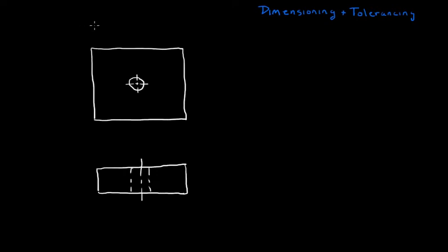So what is a dimension? Well, if you think about the views, the purpose that they serve, they display and convey to us, the reader of the print, the shape of the object. But in order to manufacture this item, we need to know some more information. And specifically, what dimensioning and tolerancing will convey is the size. So in this case, we have what looks to be a flat plate. And if we imagine we were going to make this block, the first thing we would need to know is how thick is it.